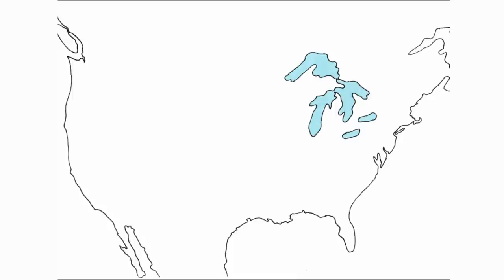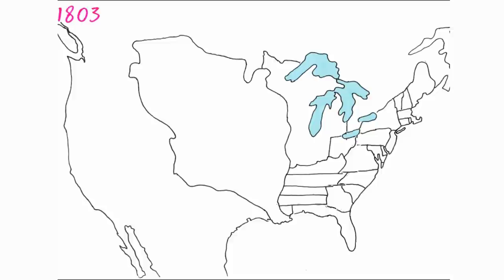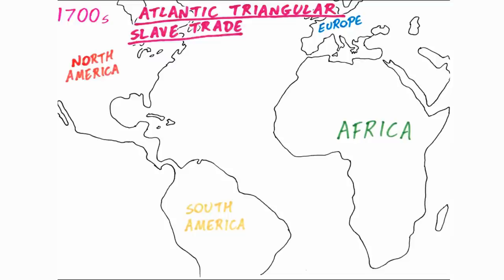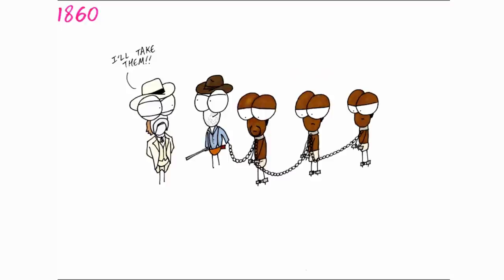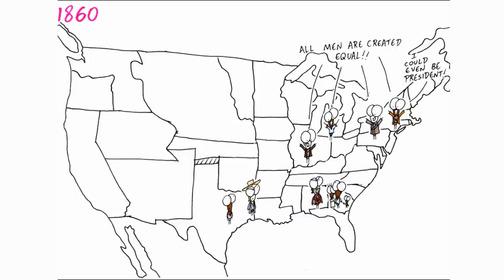Since winning their independence and ratifying their constitution in 1789, the United States of America began expanding across North America through purchase, conquest, forced migration and genocide, bringing in new territories to the Union. Since its colonial times, America saw a huge trade in enslaved people from Africa as these people were bought and sold as property.